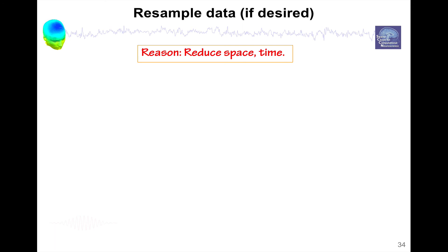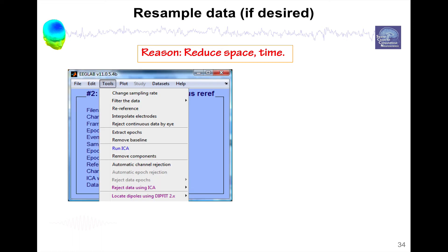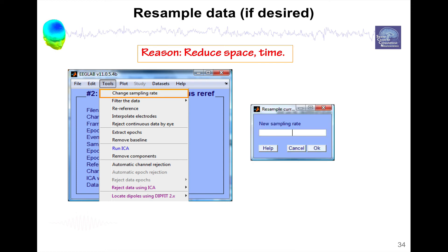The next step is to resample the data if desired. The main reason is to reduce disk space and processing time — for instance your amplifier might collect data at 2 kHz and you don't need that time resolution for processing. You would go to Tools > Change Sampling Rate and select a new sampling rate, for instance 256 Hz. Importantly, when you change the sampling rate EEGLAB will automatically low-pass filter the data at half the new sampling rate — so if you resample to 256 Hz it will low-pass filter at 128 Hz.